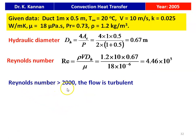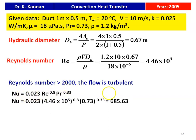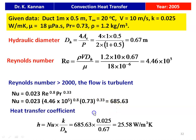The Reynolds number is greater than 2000, so for internal flow the flow is turbulent. The Nusselt equation for turbulent flow: Nu = 0.023 × Re^0.8 × Pr^0.33, as given in the problem. So Nu = 0.023 × (4.46 × 10⁵)^0.8 × (0.73)^0.33 = 685.63. The heat transfer coefficient: h = Nu × k / D_H = 685.63 × 0.025 / 0.67 = 25.58 W/m²·K.